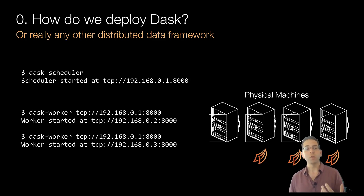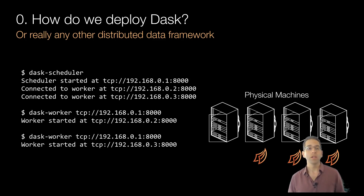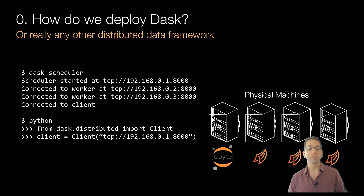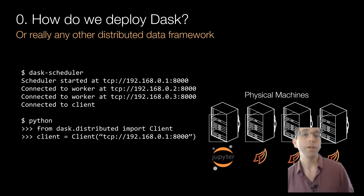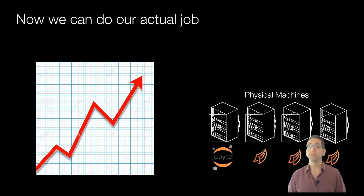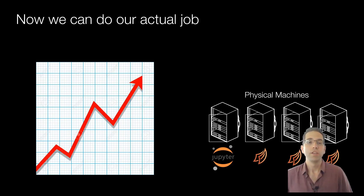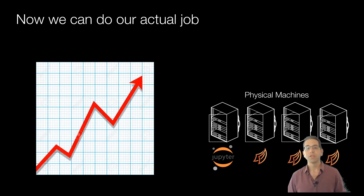Then, when we want to harness all of these machines, we start up a Jupyter process or run some automated script, import the Dask client, and connect to that same scheduler address — giving us access to all of these machines. We can then run Dask code, which looks very similar to normal Python code, and operate at scale. If you have a bunch of machines sitting in your house, you can do this right now. And we can now do our actual job — statistics, data science, curing cancer — rather than thinking about all these IT problems.